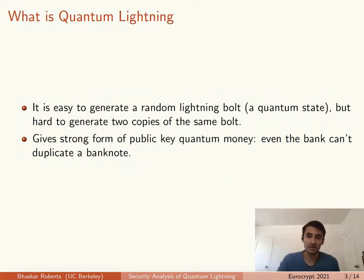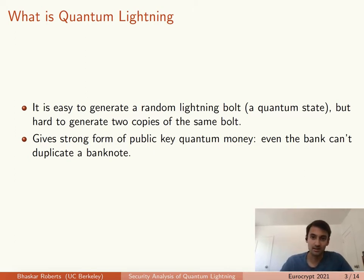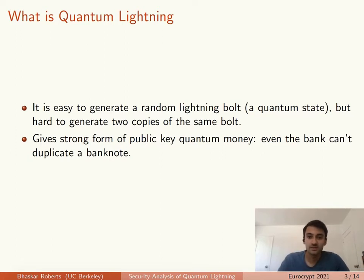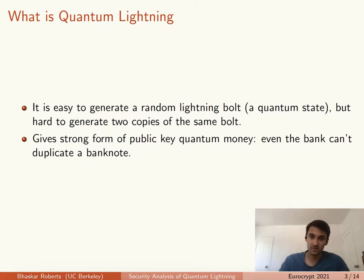Quantum lightning deals with unclonable quantum states called lightning bolts. A lightning bolt is a quantum state plus a classical serial number. As with public-key quantum money, the bolts can be verified using only public information, but it's hard to produce two bolts with the same serial number that will both pass verification. The difference is that the lightning bolts can also be generated using public information, meaning even an adversary could run the generation function and produce many valid lightning bolts, each with a unique serial number. Quantum lightning can be used to construct a strong form of public-key quantum money in which not even the bank that produces the banknotes can produce two banknotes with the same serial number.